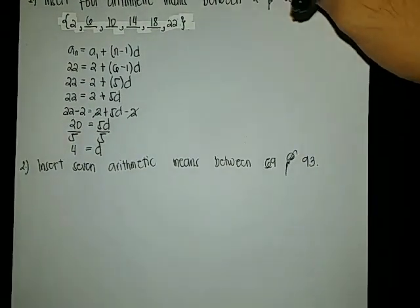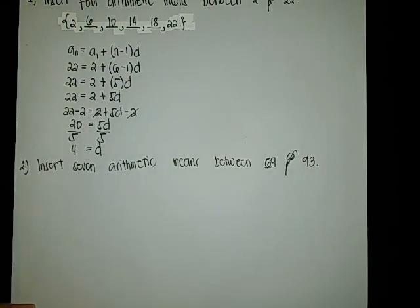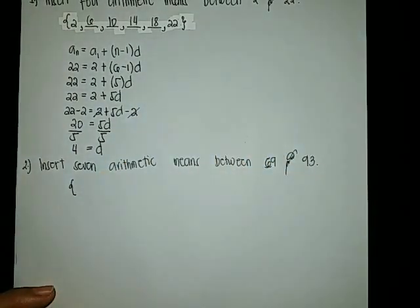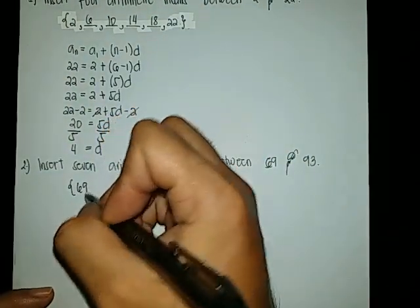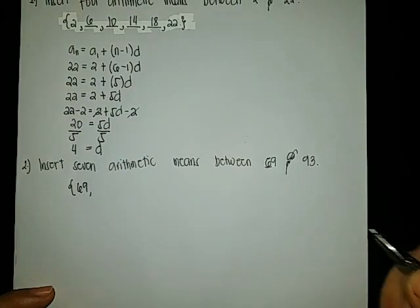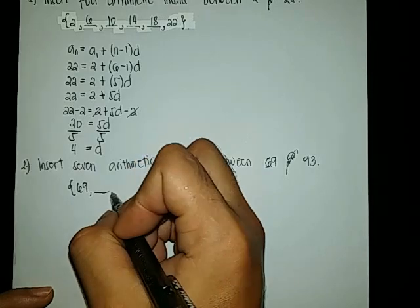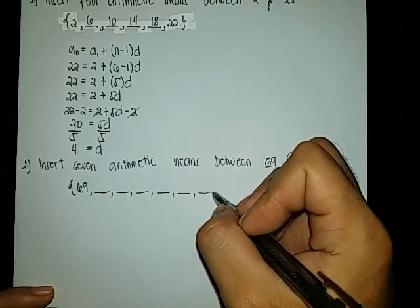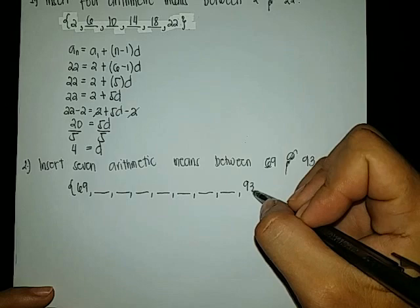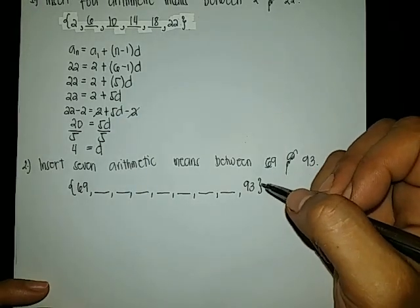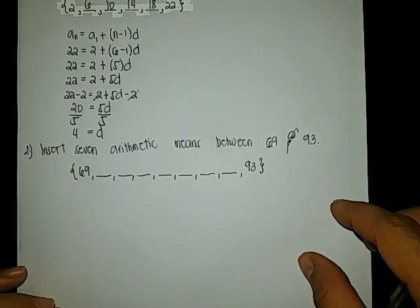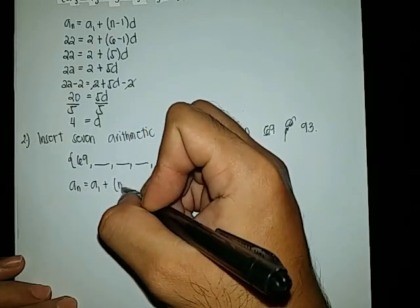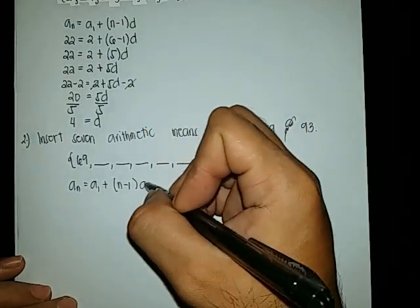Another example: insert 7 arithmetic means between 69 and 93. Our arithmetic sequence will start with 69 as the first term, then 7 blank numbers between them, and 93 as the last term — giving us 9 total terms. We will use the same formula: a sub n equals a sub 1 plus the quantity of n minus 1 multiplied by d.